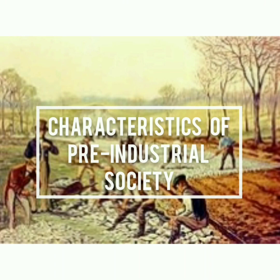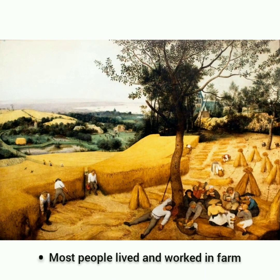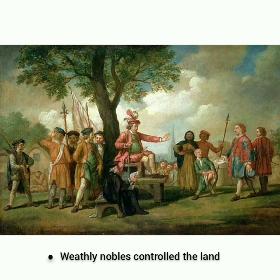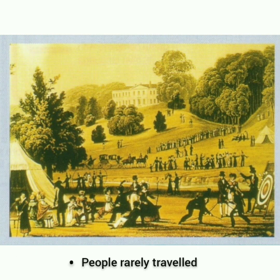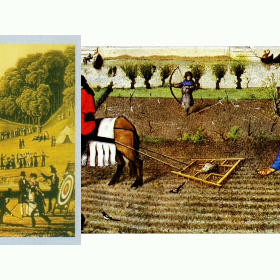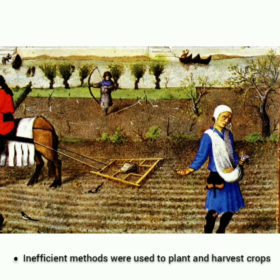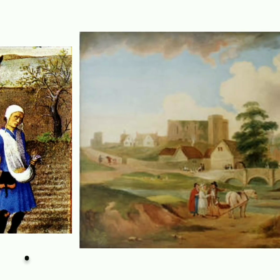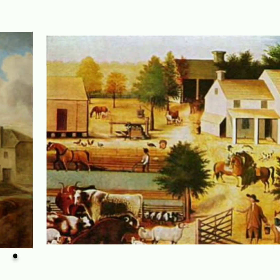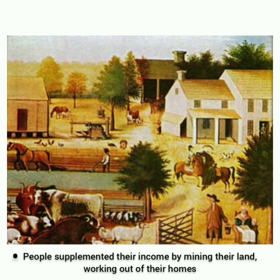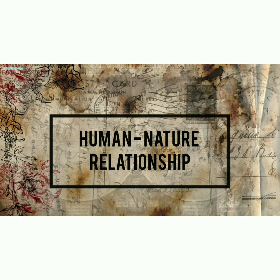Characteristics of pre-industrial society: Most people lived and worked on farms. Wealthy nobles controlled the land. Agricultural methods had not changed drastically in centuries. People rarely traveled. Inefficient methods were used to plant and harvest crops. Communication between towns and cities was slow and infrequent. People supplemented their income by mining their lands or working out of their homes.